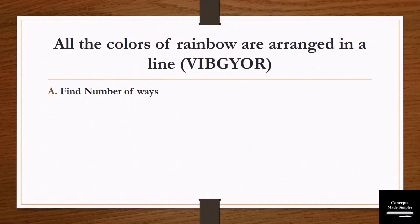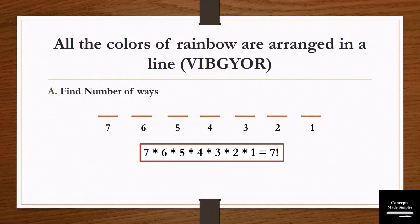The question is: find the number of ways. This is a very simple question and we can solve it using the fundamental principles of counting. We have 7 placeholders. The first placeholder can be filled in 7 ways, the second in 6, then 5, 4, 3, 2, and 1. So the final solution is 7 × 6 × 5 × 4 × 3 × 2 × 1, which is equal to 7 factorial.